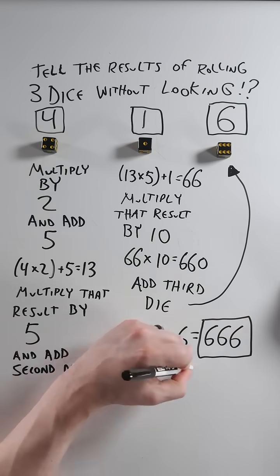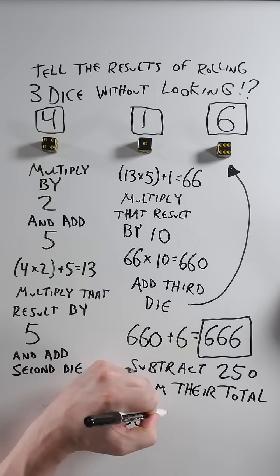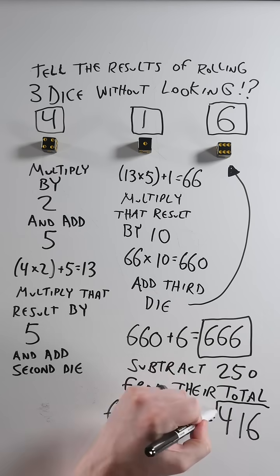Here's how. You just subtract two hundred fifty from their total. Six hundred sixty-six minus two hundred fifty equals four hundred sixteen. Look familiar?